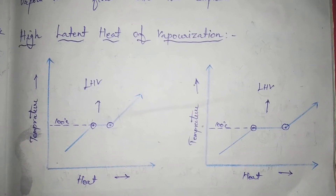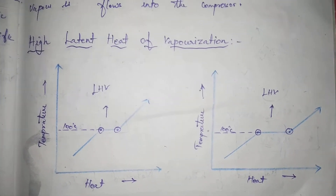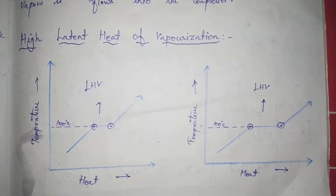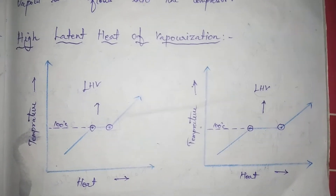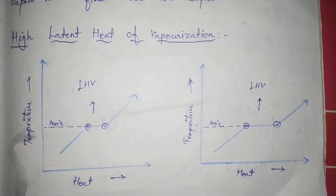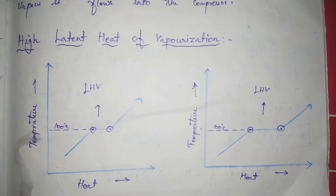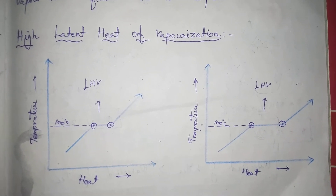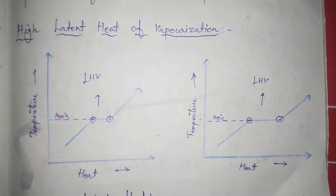In the next video, we will discuss the choice of refrigerant. We will cover liquids with low specific heat capacity, vapors with high specific heat capacity, and critical temperature in detail. In this video, we will talk about the properties of refrigerant.